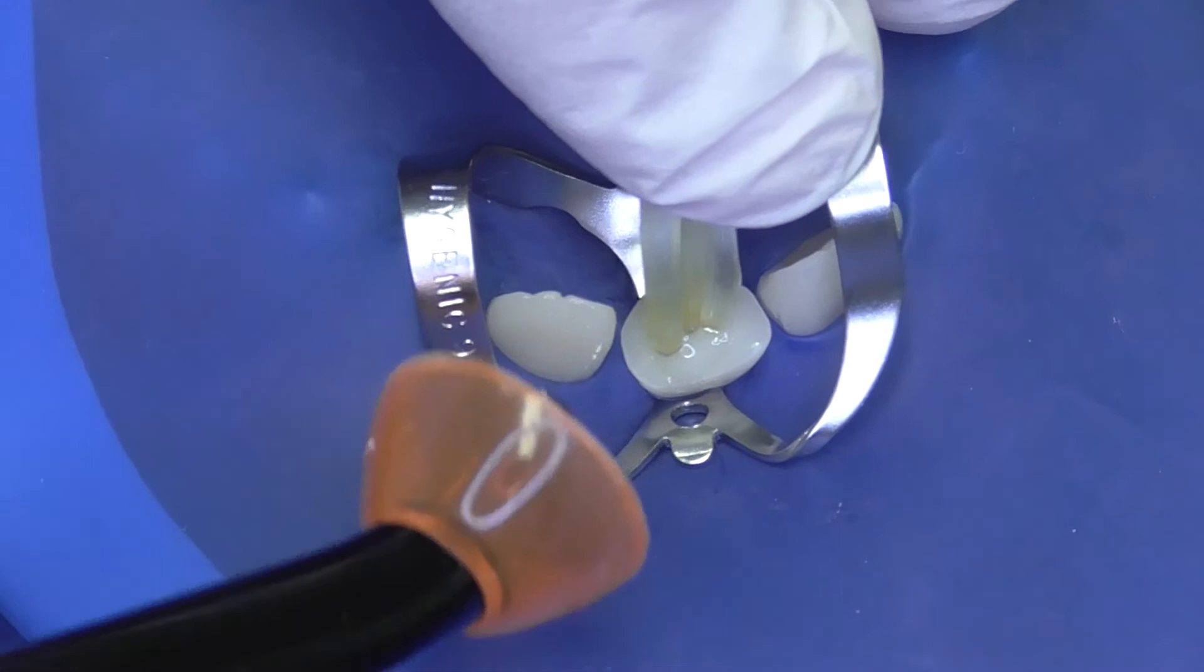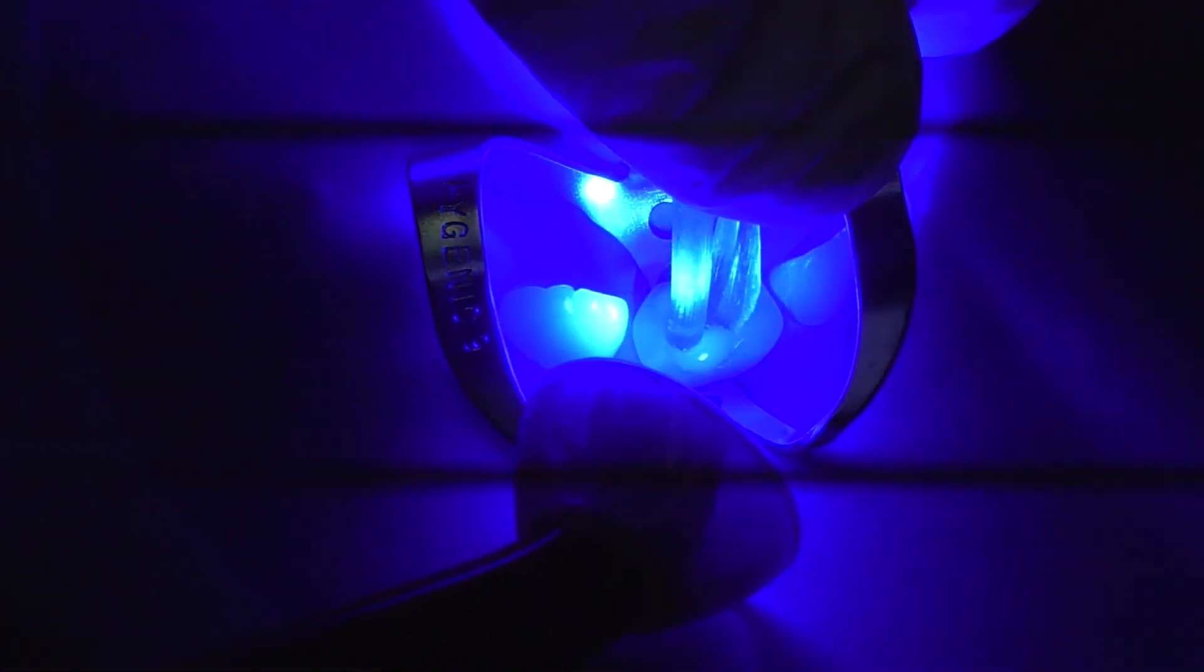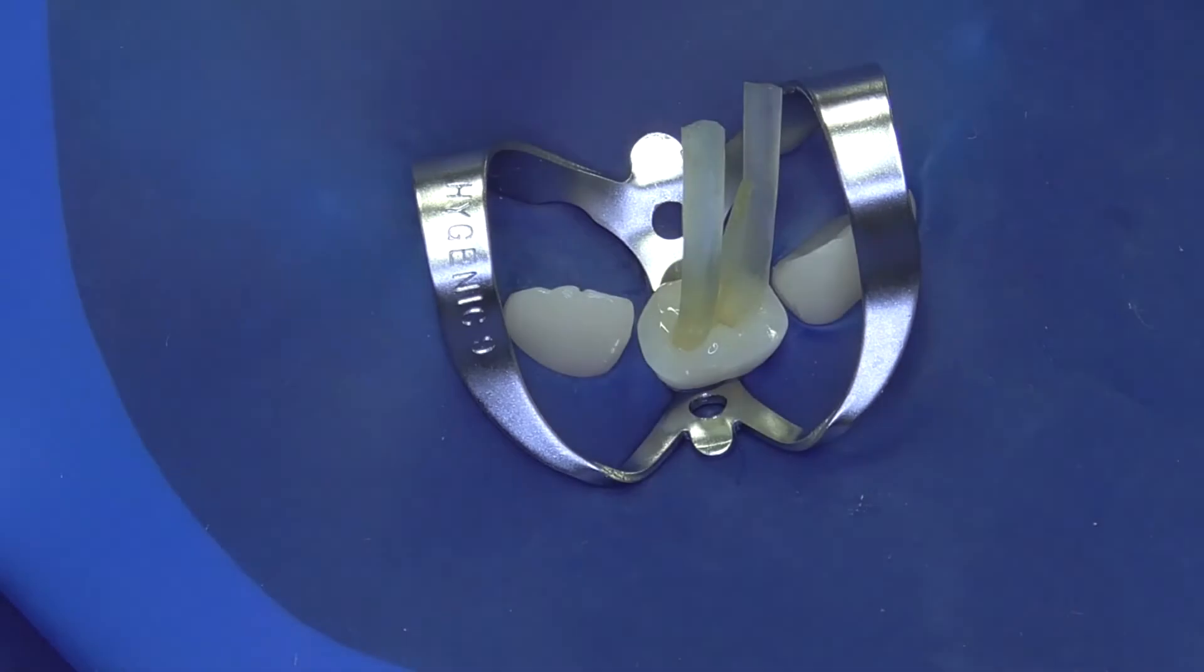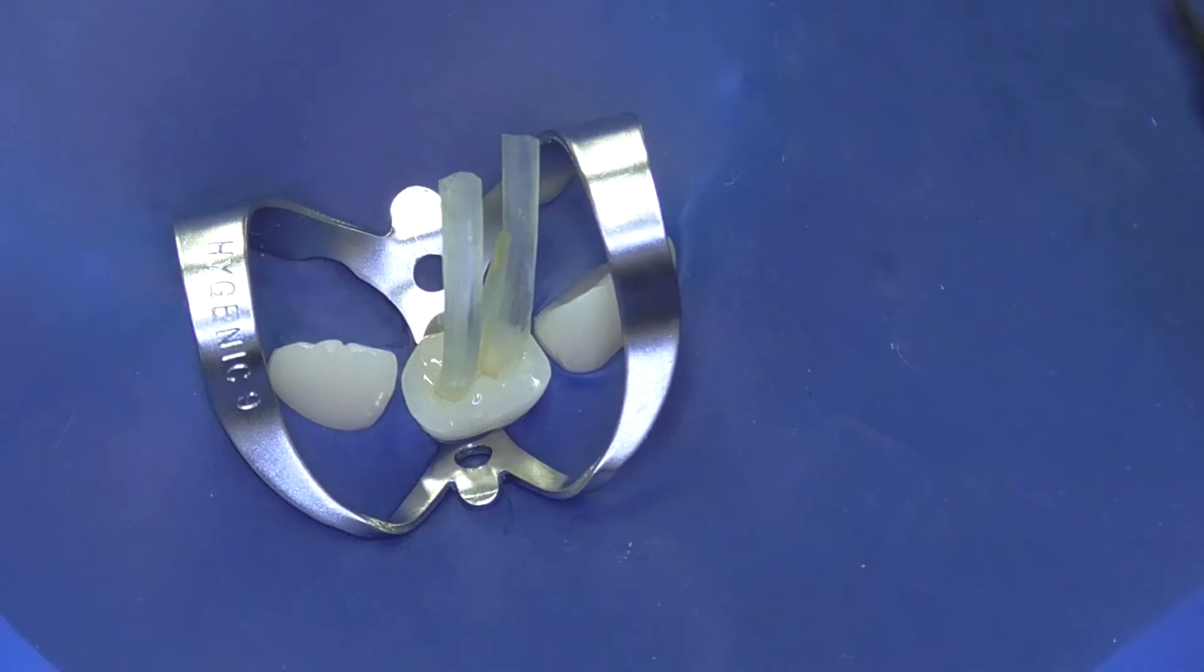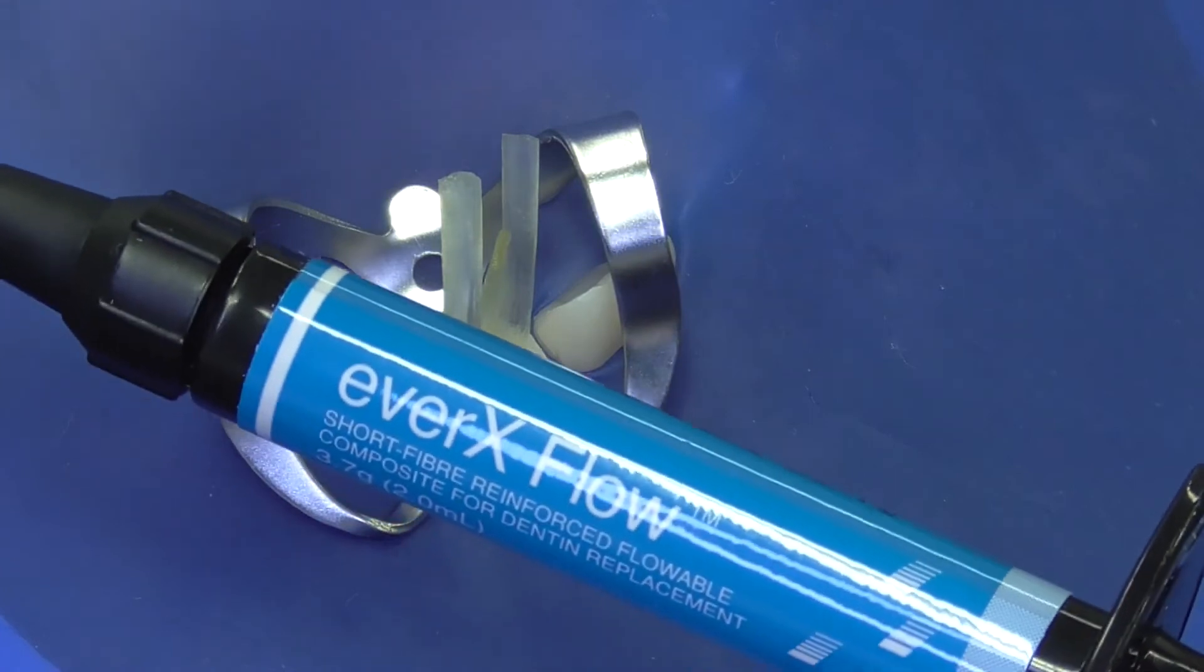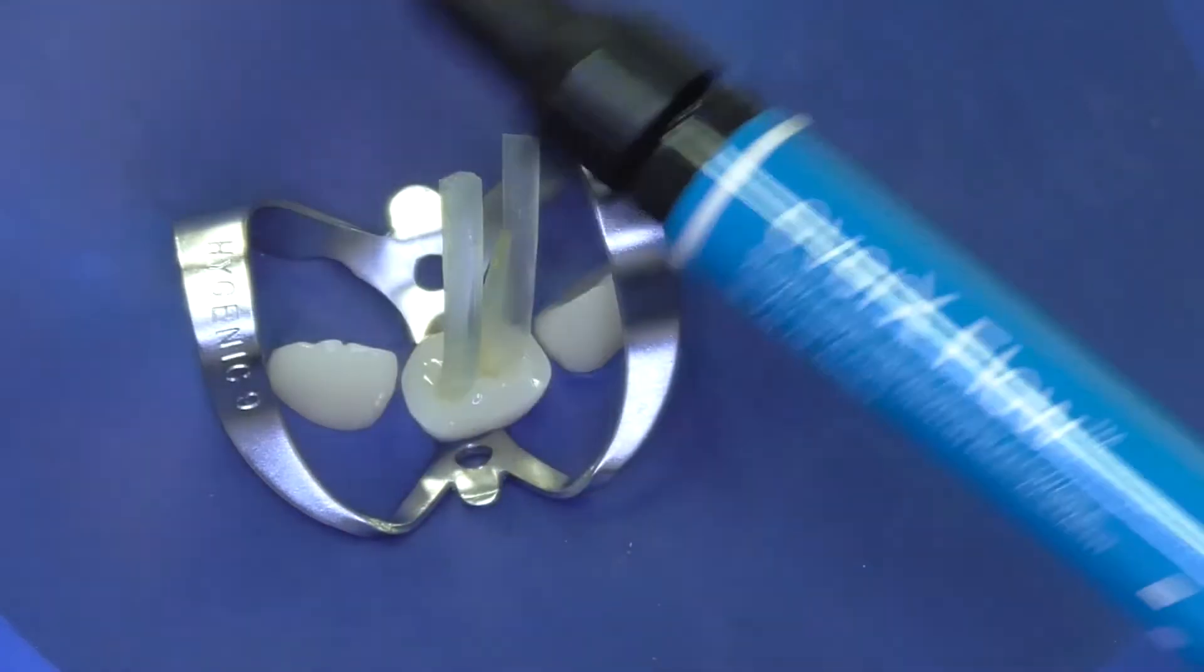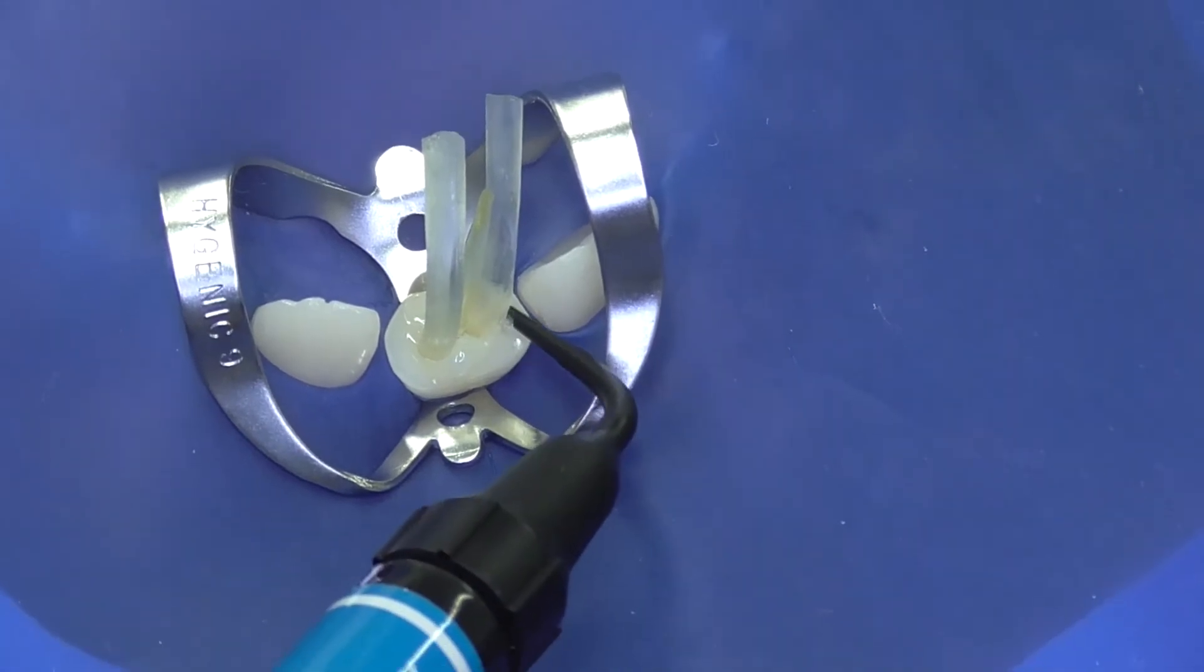Final curing of the post with the light transmitting through the fiber post will be made after cutting the fiber ends. The actual core in this case will be made out of reinforced composite material, short fiber reinforced EverX Flow.